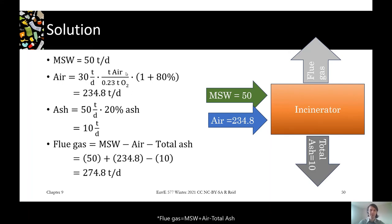we multiply it by 1 over the oxygen content of air, which is 23% by mass, and then multiply that by 1 plus the excess. So 30 tons of oxygen is actually 235 tons of air total, which gives us this air flow.